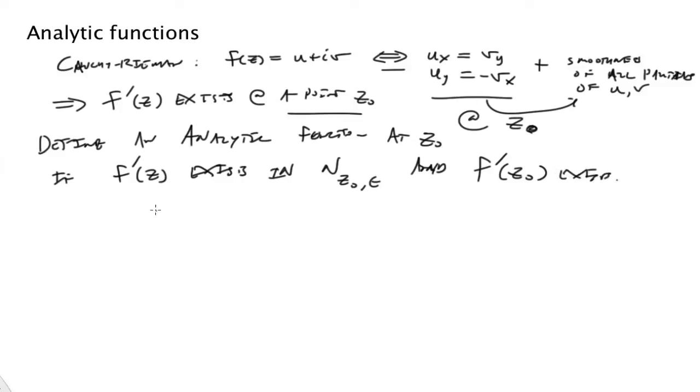Okay, so it's a straightforward definition. If you're interested in a certain point z0, find a small neighborhood around it, and if everywhere in that neighborhood f prime exists, it is analytic at the point z0. Okay, so then we say that f is analytic. Alright, so that's the basic definition.